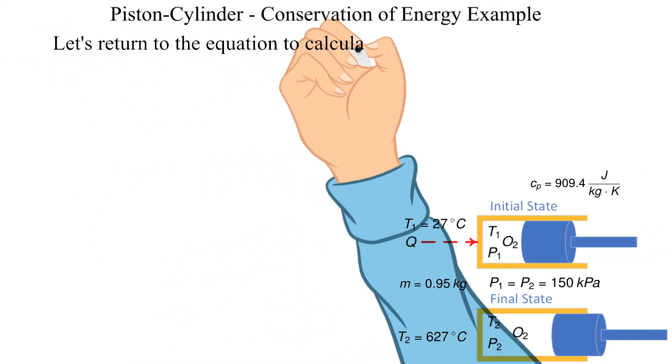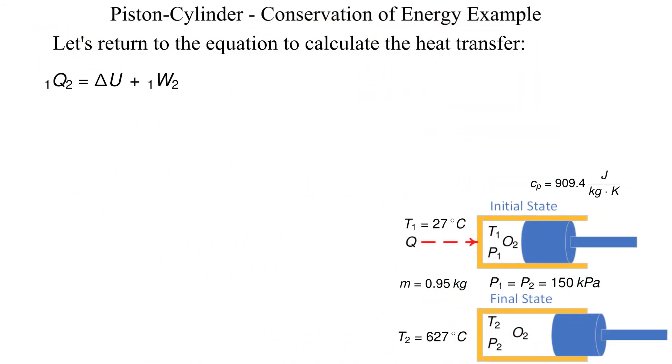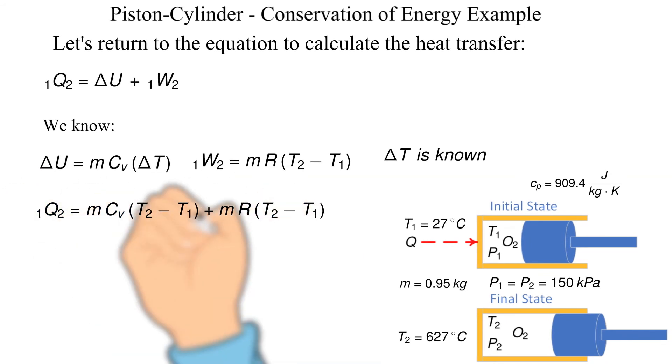Now we bring it all together and plug back into the conservation of energy equation. At this point we recognize that we can simplify the equation since the constant pressure specific heat is equal to the constant volume specific heat plus the gas constant. The resulting equation is that the heat transfer is equal to the mass times the constant pressure specific heat times the change in temperature.